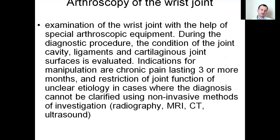Arthroscopy of the wrist joint uses special arthroscopic equipment; during the diagnostic process, the condition of the joint cavity, ligaments, and cartilaginous joint surface is evaluated. Indications include chronic pain lasting three or more months and restriction of joint function of ankylosing etiology where diagnosis cannot be clarified using non-invasive methods such as radiography, MRI, CT, and ultrasound.